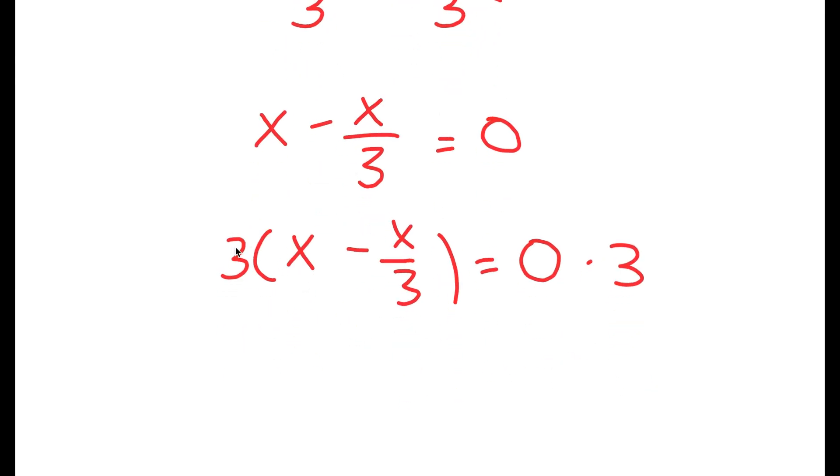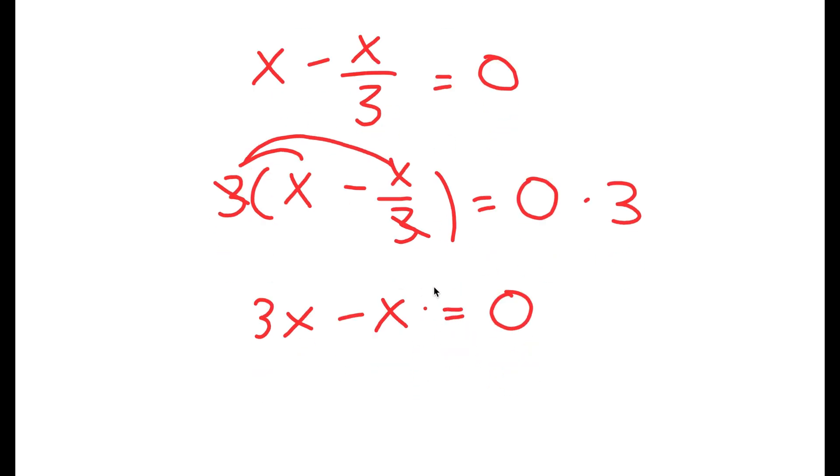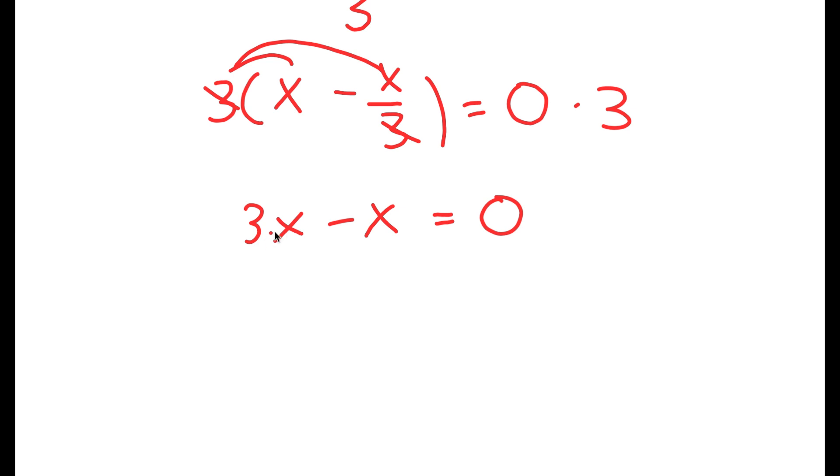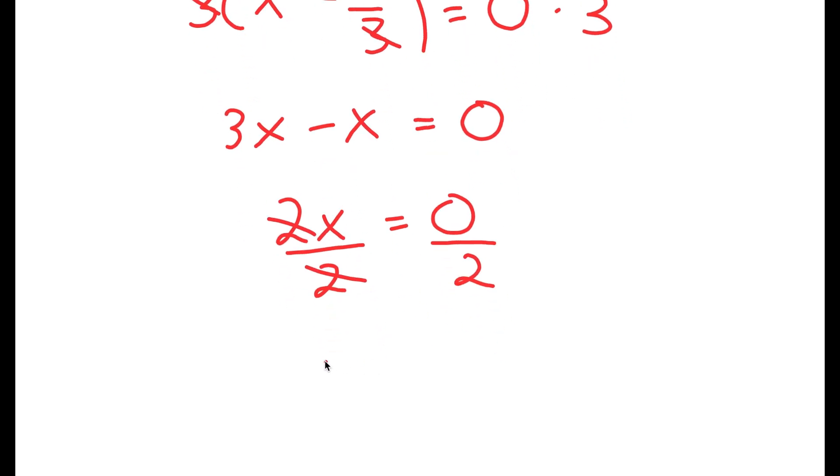Now I have to distribute the 3 and multiply it with all my terms in my parentheses. So 3 times x is 3x and 3 times negative x over 3. Well, this 3 and this 3 cancel out. So all I'm going to get is equal to 0. And now if I divide both sides by 2, these two cancel out. And I get x is equal to 0 divided by 2, which is 0.